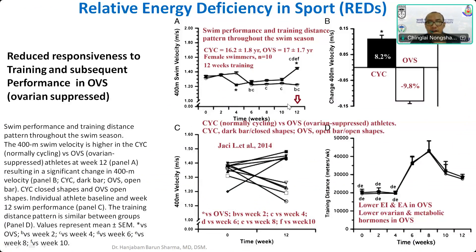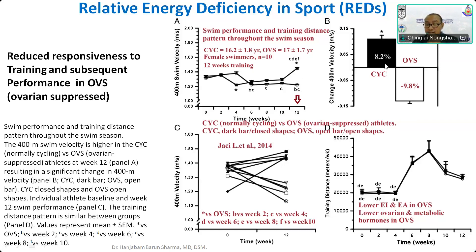For example, in this study of female swimmers, the open circle represents ovarian-suppressed athletes — that is, athletes with the female athlete triad — and the closed circle represents normal menstruating females. From week 0 to week 12, when the same amount of training and distance was given, you can see that 400-meter swim velocity significantly improved for normal menstruating females compared to the ovarian-suppressed group. There was a 9.8% drop in performance for the ovarian-suppressed athletes, whereas an 8.2% improvement was seen in the normal group. This demonstrates reduced training responsiveness and subsequent performance decrement when female athlete triad or REDS is present.